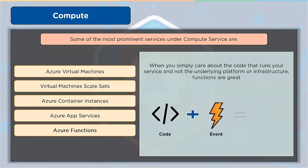Azure Functions are used when you simply care about the code that runs your service and not the underlying platform or infrastructure. They're frequently used when you need to respond to an event — typically via a REST request, a timer, or a message from another Azure service — and the job can be accomplished rapidly in seconds or less.